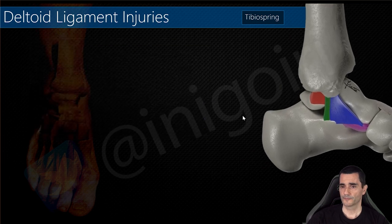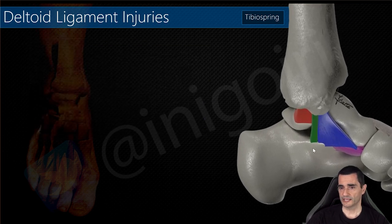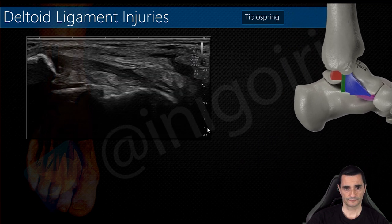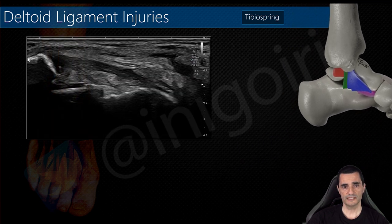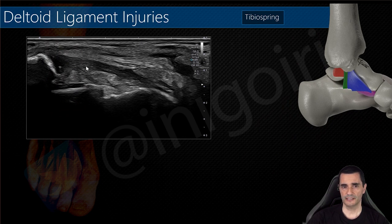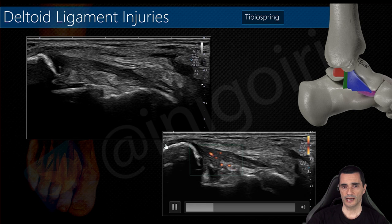We have seen the tibiocalcaneal component; now the tibiospring component between the tibia and the spring ligament. This is the tibiospring ligament on its short axis and you can notice here the thickening and hypoechogenicity of this component.